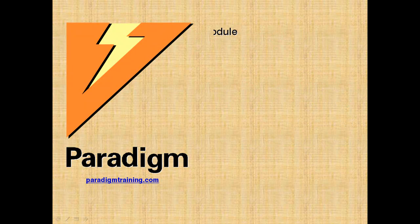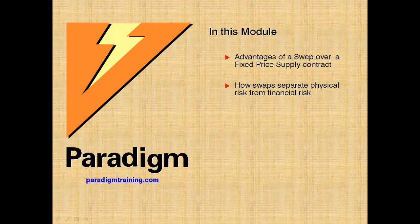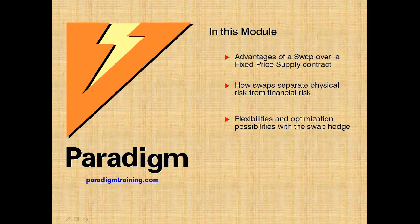Topics covered in this module begin by considering the advantages swap hedges have compared to using fixed price physical supply. Key to this is the ability of swap hedges to separate physical supply and delivery risks apart from financial or price risk. This in turn provides structuring flexibilities not generally possible with fixed price supply, and allows the hedger to manage each risk discreetly and optimally.